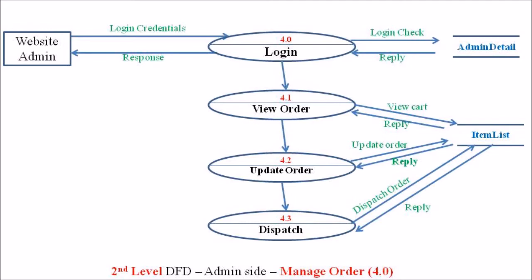While verifying with the item list, the admin can proceed with the next step — update order. In the update order process, the admin can update the recent actions taken on that particular order, whether the order is packed, dispatched, or delivered. These actions are reflected in the item list database, which changes based upon the actions performed by the website admin. The final process in the manage order scenario is the dispatch or delivery of that product. In the dispatch or delivery process, the admin reflects that change in the item list database. In each and every process, the databases are associated and updated based upon the different actions performed by the admin.